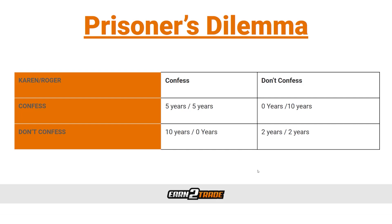The prisoner's dilemma represents the game of social interaction between them when the district attorney decides to press the matter by offering each of them a set of choices. The DA tells Karen and Roger they're both going to get two years in jail for the original crime. However, if either of them snitches on the other, they won't get any jail time at all, whereas the person being snitched on will get 10 years. They both get 10 years if they snitch on each other, but if they decide not to snitch on each other, they'll only get two years.